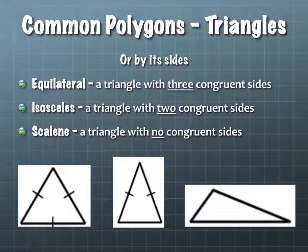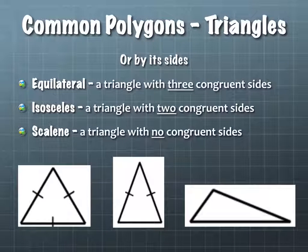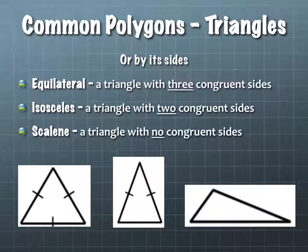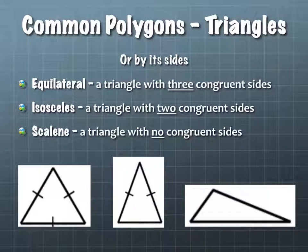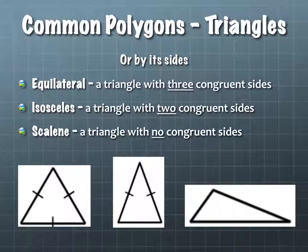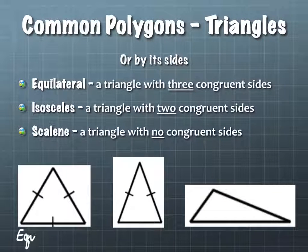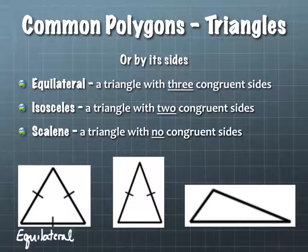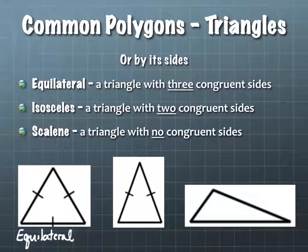The first triangle on screen — what is it? It's equilateral. Here's the catch: it's also isosceles, because the definition of isosceles doesn't say exactly two sides are the same — it just says it has two sides. So the best name for this picture is equilateral, but it would also technically be an isosceles triangle.